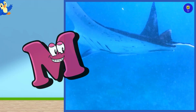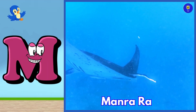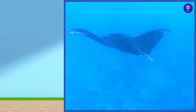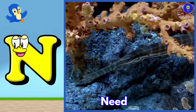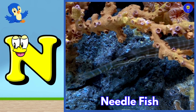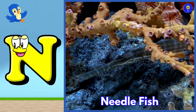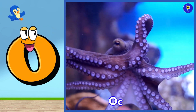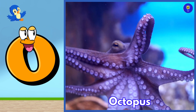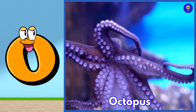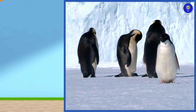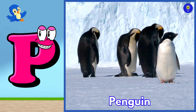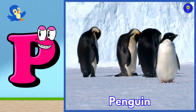M is for manta ray. Muh, manta ray. N is for needlefish. Nuh, needlefish. O is for octopus. O, octopus. P is for penguin. Puh, penguin.